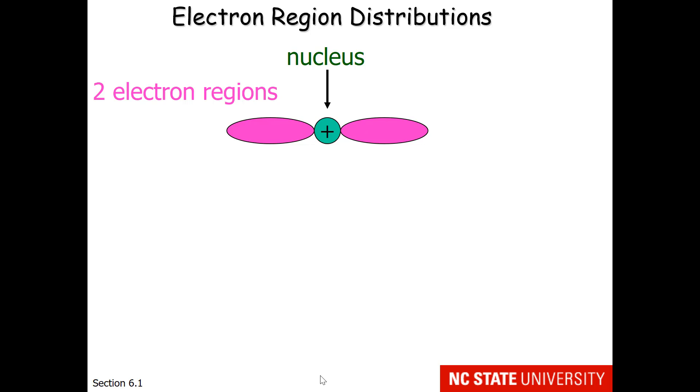So remember that VSEPR says electrons will try to get as far away from one another as possible while still being tethered to the nucleus. So for an atom with two electron regions, the furthest each electron region can get away is exactly opposite one another on the nucleus. That bond angle is 180 degrees.